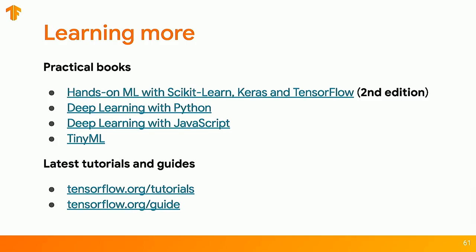Here are four books I recommend. The first covers TensorFlow 2 with low-level details — buy only the second edition, as the first teaches TensorFlow 1. The second is the Keras book by François Chollet, which doesn't mention TensorFlow at all but is outstanding for beginners; all its code works in TF2 by saying 'from TensorFlow import Keras.' Third is Deep Learning with JavaScript for TensorFlow.js. Fourth is TinyML by Pete Warden, which is brand new. Thanks very much — I'll be around after for questions.